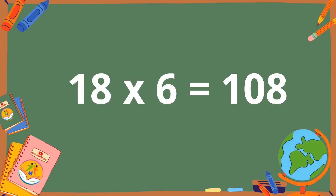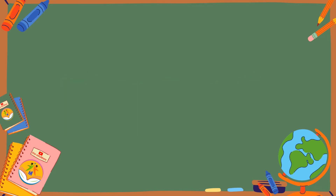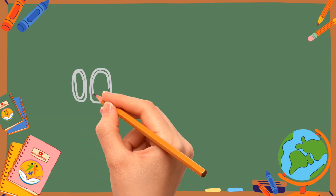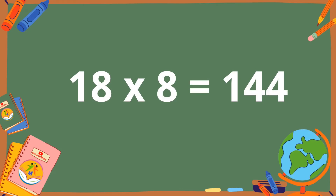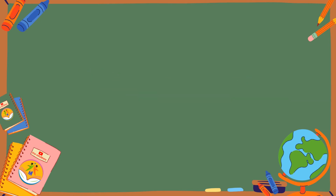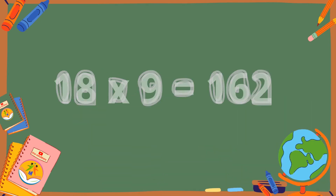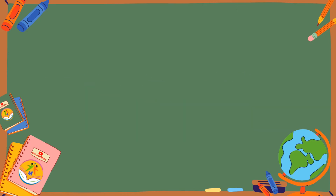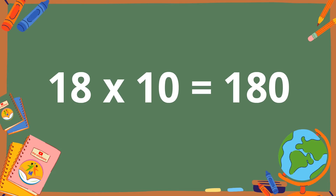18 sixes are 108. 18 sevens are 126. 18 eights are 144. 18 nines are 162. 18 tens are 180.